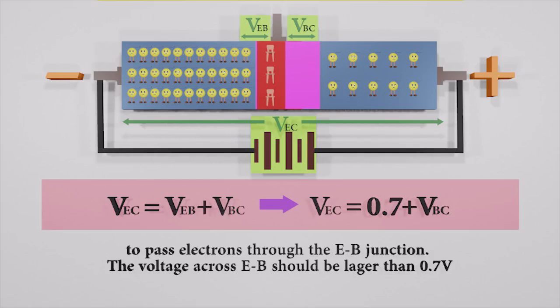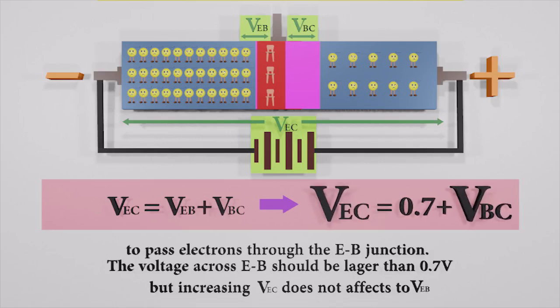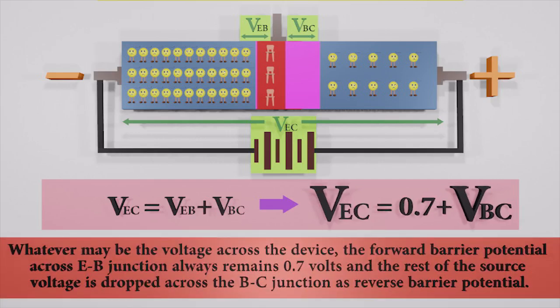If we increase the VCE furthermore, it only goes to increase the reverse bias of VBC. Whatever be the voltage across the device, the forward barrier potential across the EB junction always remains 0.7 volt, and the rest of the source voltage is dropped across the BC junction.